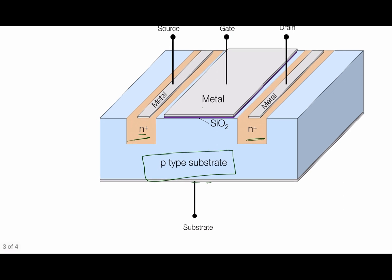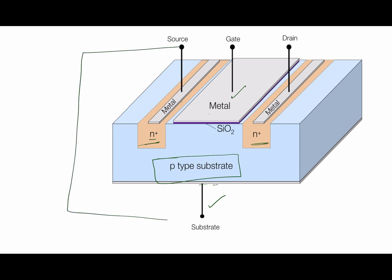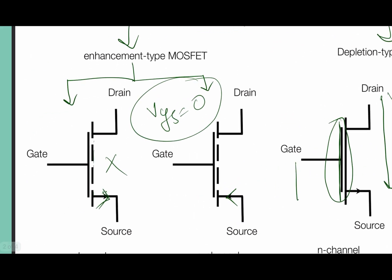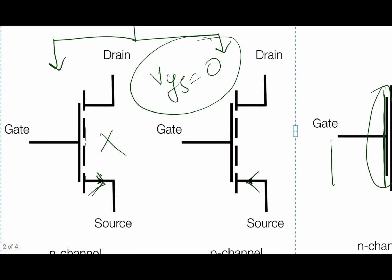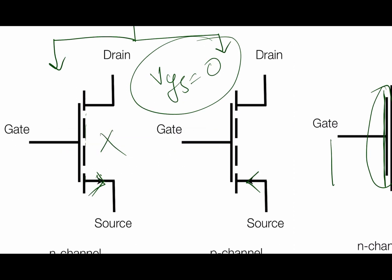MOSFET is generally a four-terminal device. The terminals are: source, drain, gate, and substrate. The source and substrate are commonly grounded together, which is why in this slide only three terminals are shown — drain, gate, and source. In some books the substrate and source appear as separate terminals, but generally they are grounded together, making it effectively a three-terminal device.